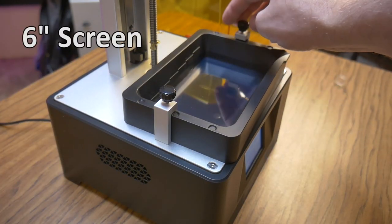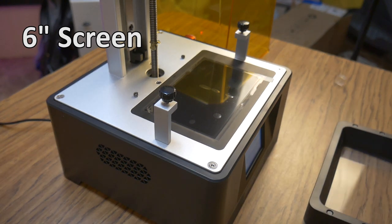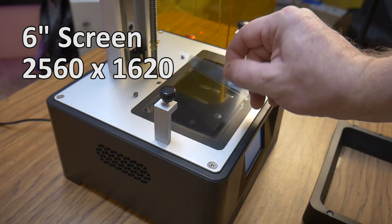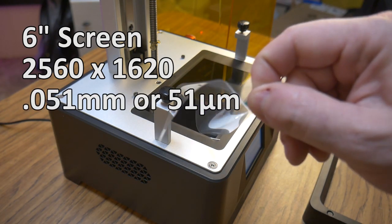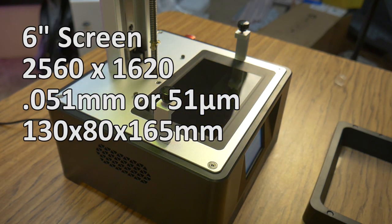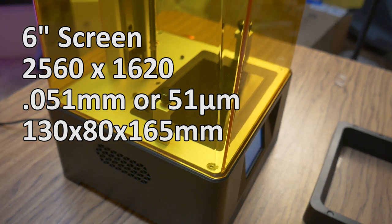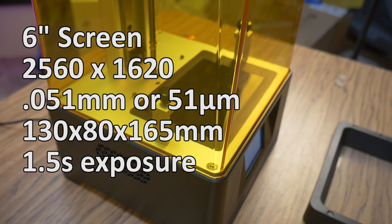The 6 inch LCD screen is monochromatic and sports a resolution of 2560 by 1620 which gives it a pixel width of 0.051 millimeters or 51 micron. The build volume on this printer is 130 by 80 by 165 millimeters and Anycubic boasts a printing speed as fast as 1.5 seconds per layer.